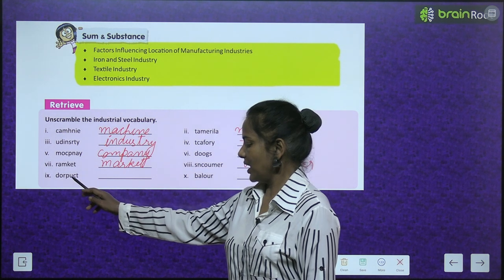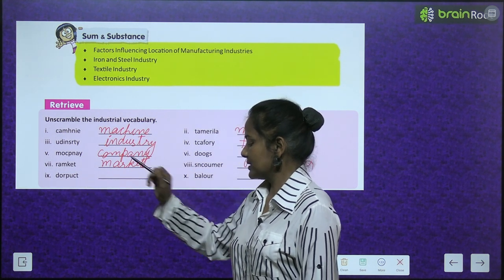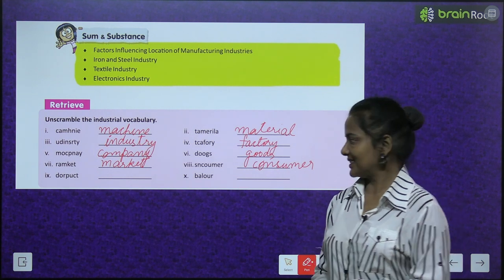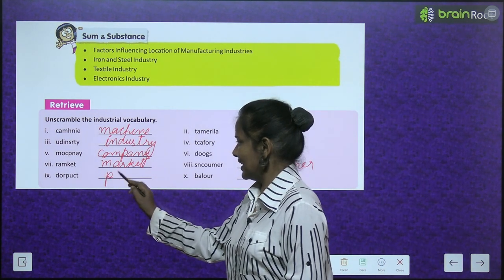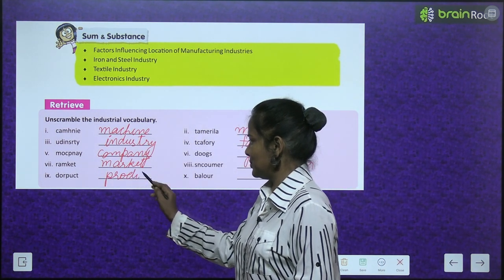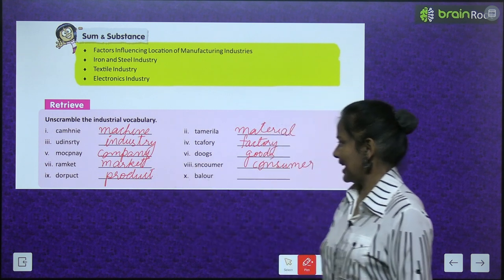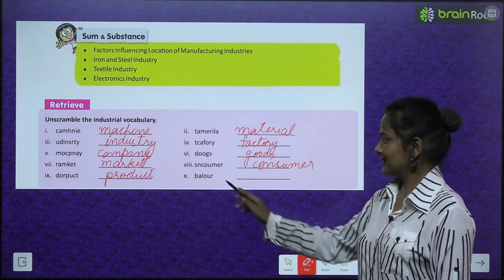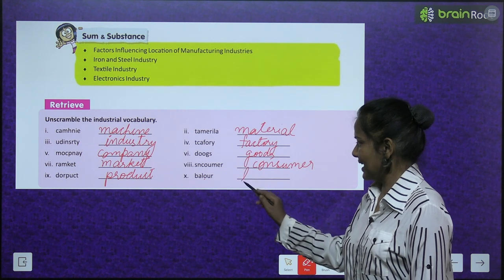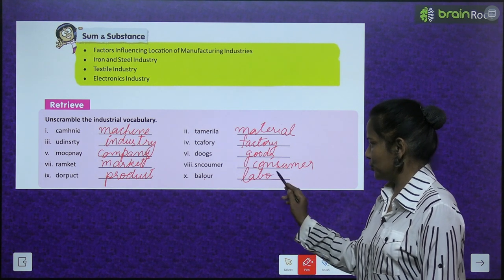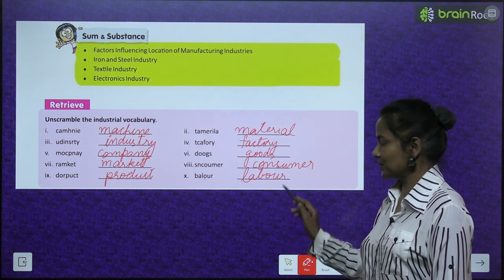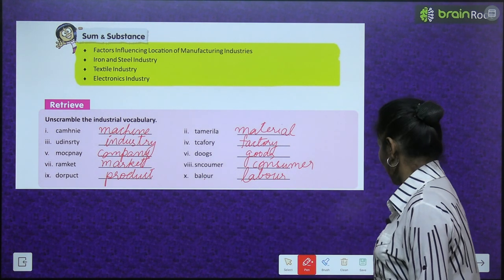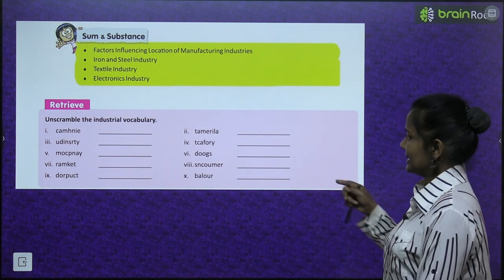D-O-R-P-U-C-T — product, P-R-O-D-U-C-T. And finally B-A-L-O-U-R — L-A-B-O-U-R, so it becomes labour. That was fun! Now let's move ahead.